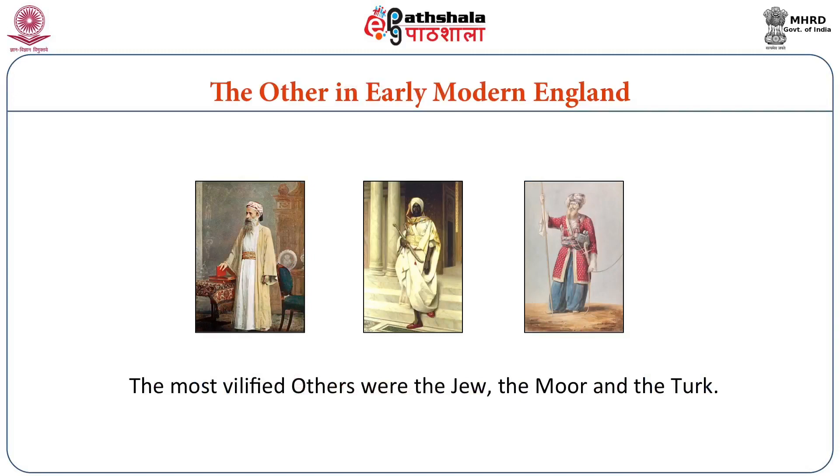English men and women who did not travel saw this in print but also in the drama of the time, where eastern emperors with large harems were shown on stage. This is also the period when the first embassies began to come from foreign countries — Turks and Moors sent embassies to England, and English men and women encountered the other right there at home on the streets of London. They also saw black people in England for the first time during this period in large numbers — so large that English men and women petitioned Queen Elizabeth, who issued an edict asking them to be expelled from England.